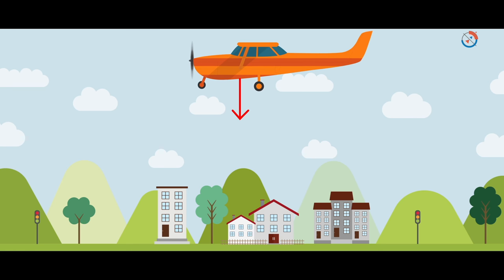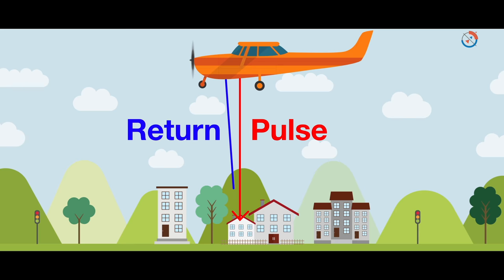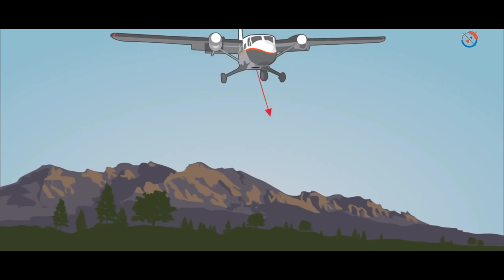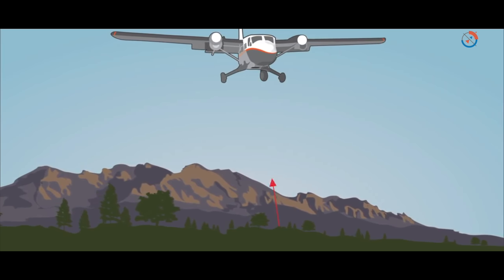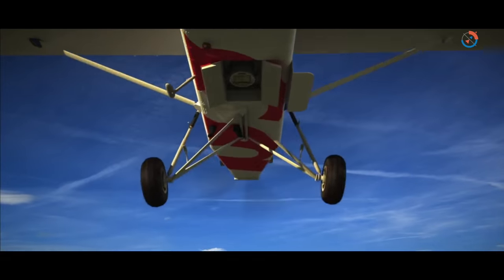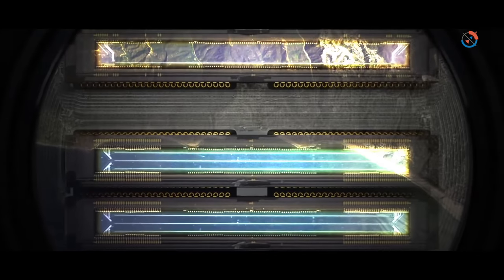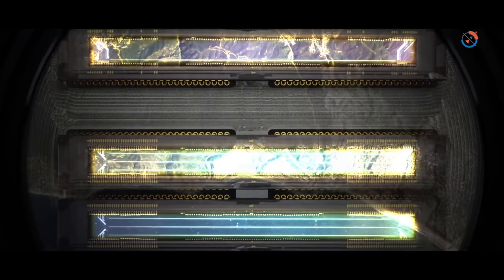Light energy emitted by a LiDAR system is known as a pulse. Light reflected from the ground or object is known as a return. The LiDAR system sends a pulse of light and waits for it to return, measuring how long it takes for the emitted pulse to return back to the sensor, giving it a variable distance of the objects.